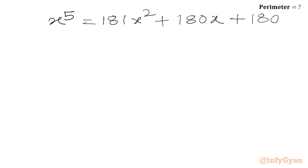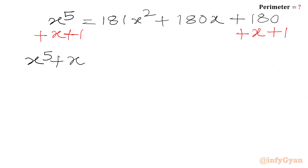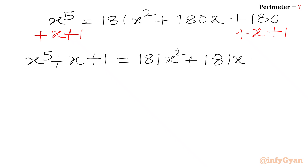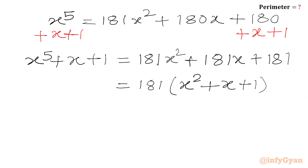Now I will add x plus 1 to both sides. So we write x to the power 5 plus x plus 1 equals 181x squared plus 180x plus x plus 180 plus 1, which gives 181x squared plus 181x plus 181. Now 181 is common, so in the bracket we write x squared plus x plus 1. On the LHS we have x to the power 5 plus x plus 1.